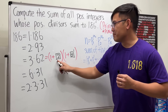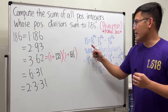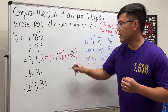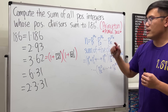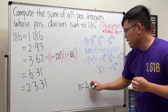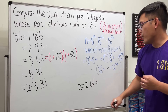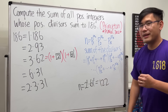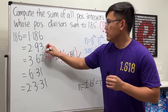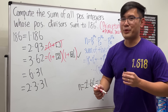Now we consider the other cases. For 2 × 93: we'd need 1 + something = 2, meaning something = 1, but 1 is not prime, so that's not possible. You might wonder about higher powers, but 1 is not prime so this factorization doesn't work.